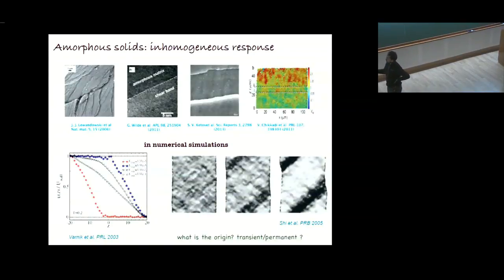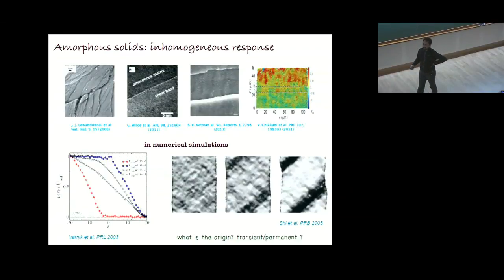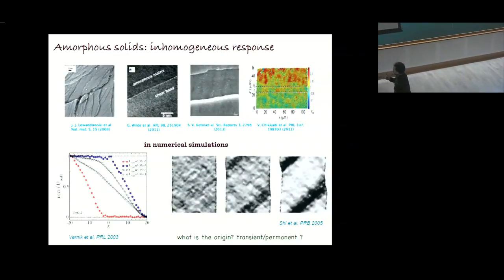In numerical simulations also, in model glasses, people have observed this kind of heterogeneous response in mobility or deformation. This has been observed way back in 2003, 2005. But still, we are unable to understand what is the origin of this kind of heterogeneous dynamics. We have not even investigated into great details what the transient states are through which the system evolves before it goes from the quiescent state to the final steady state behavior. One of the key questions was, are these deformations transient or permanent? We believe that these are transient states. What I'll show you today is, what are the transient states through which the system goes before it goes to the steady state?